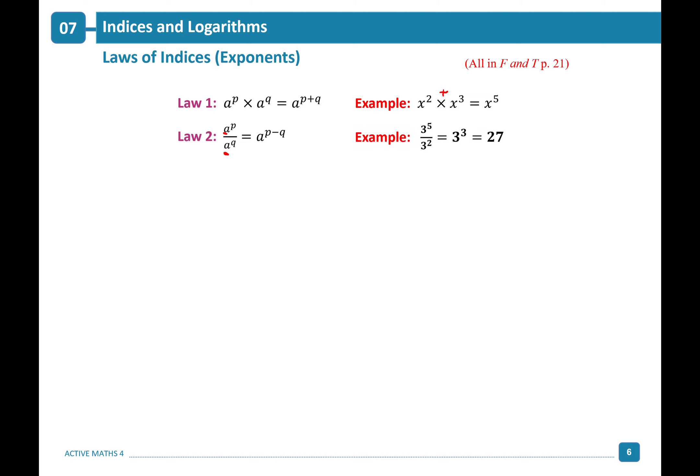Law 2: a to the power of p divided by a to the power of q — subtract the exponents (numerator minus denominator). For example, 3 to the power of 5 divided by 3 to the power of 2 gives 3 to the power of 3, which is 27.